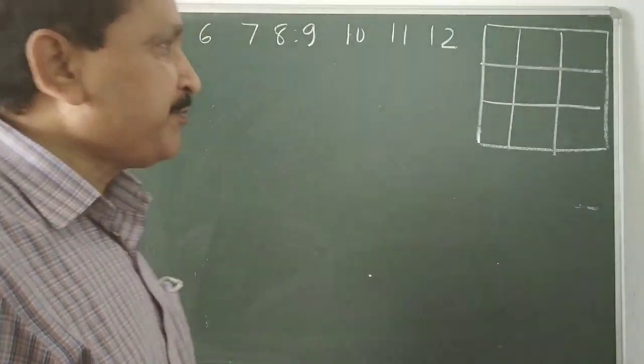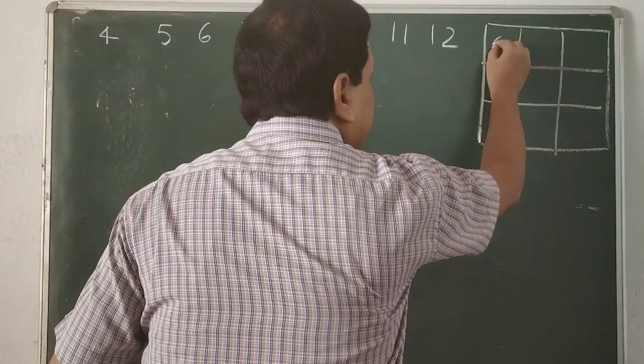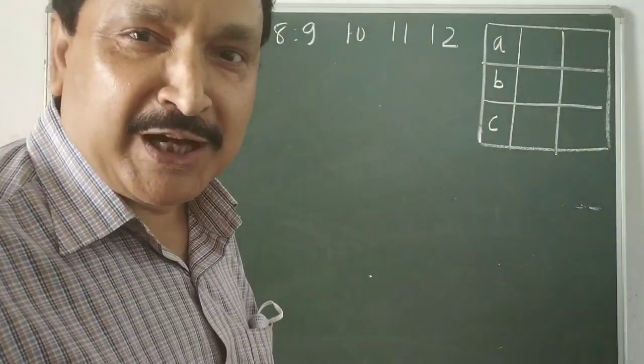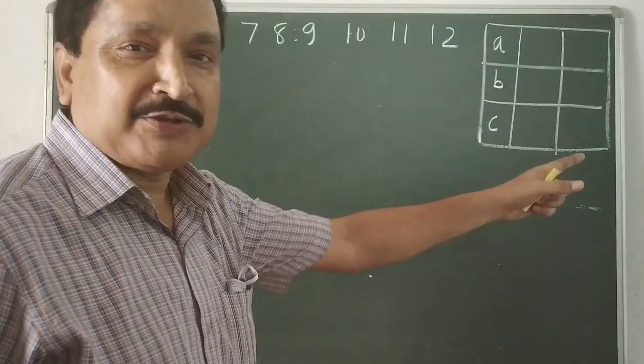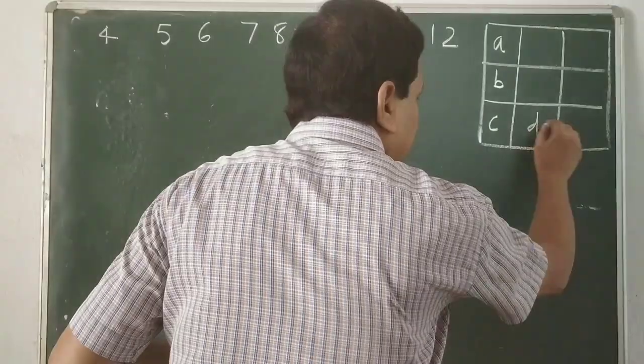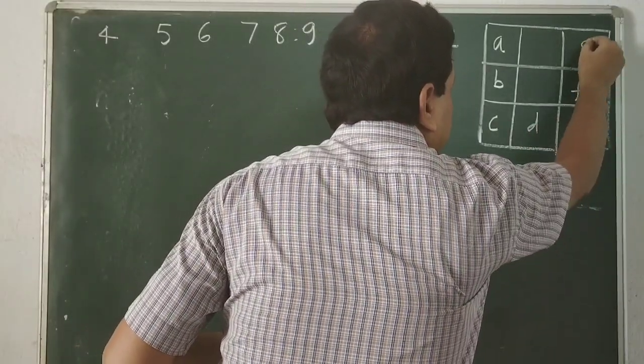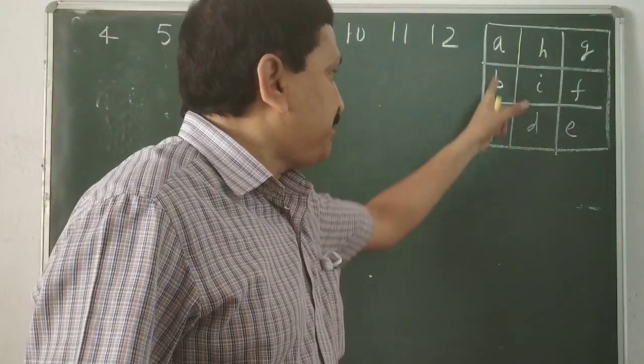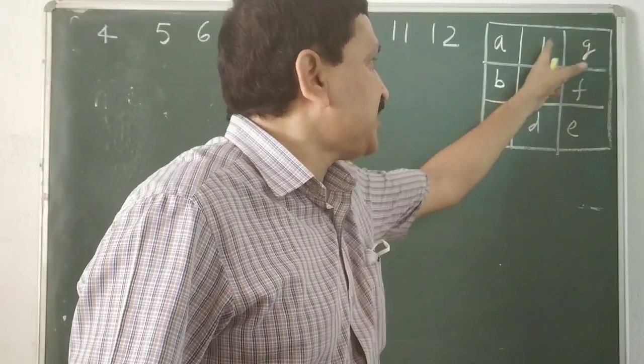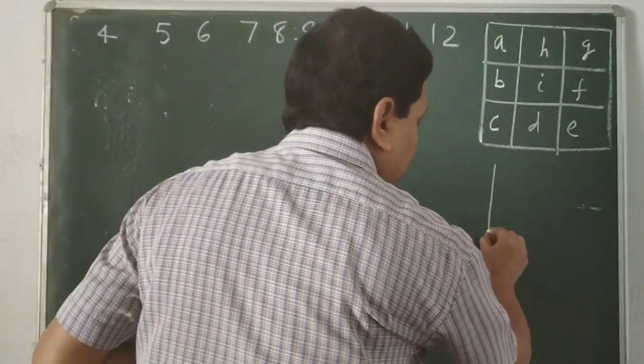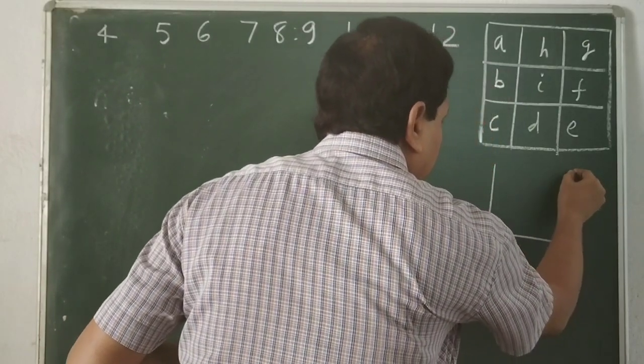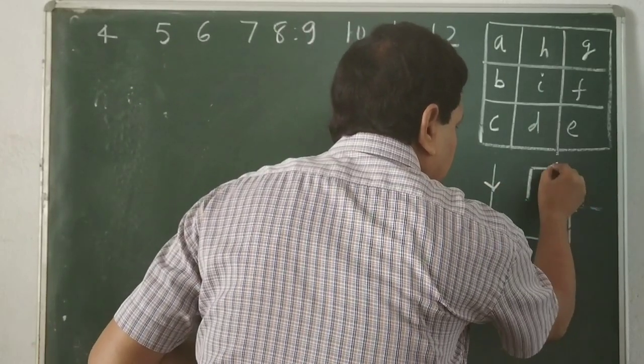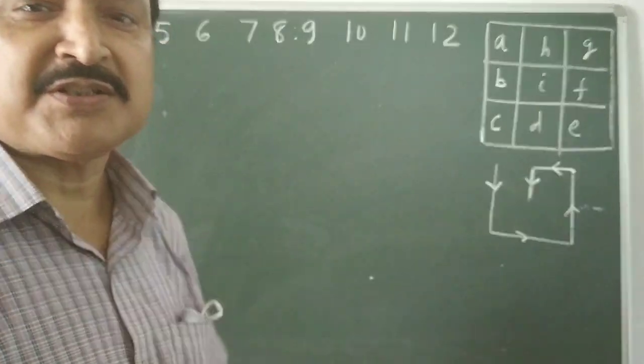So let us see. Starting from a, a small a, let this be a small a, a small b, a small c. You can also use capital alphabets. But you have to write in this way: a, b, c. After that d, e, f, g, h and i. Let us see. A, b, c. D, e, f. G, h, i. So in this way you have to move according to this direction.